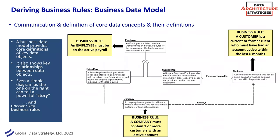This particular tool I like because it shows those business decisions right on the data model. For example, 'An employee can be a full or part-time worker who's on the active payroll for the organization — contractors are not employees.' Well, they have to be on the active payroll to be an employee. That means if they're taking time off, maybe they're not an employee. Do we include part-time? Those are all things that, when business people look at this model, they can start to discuss. Some things are different for every organization — it's a choice.